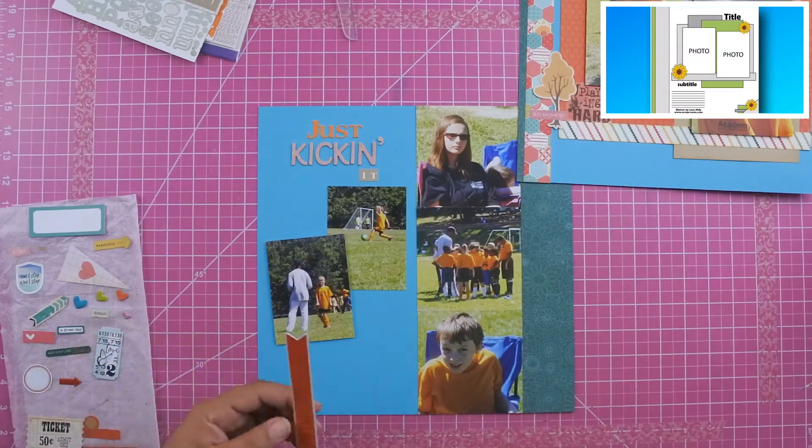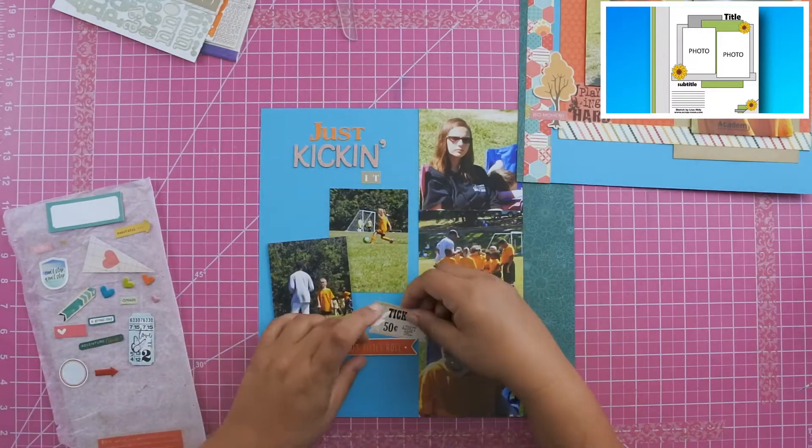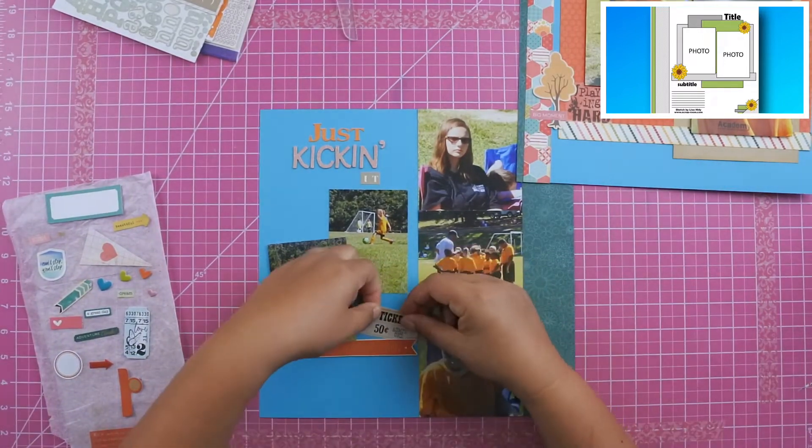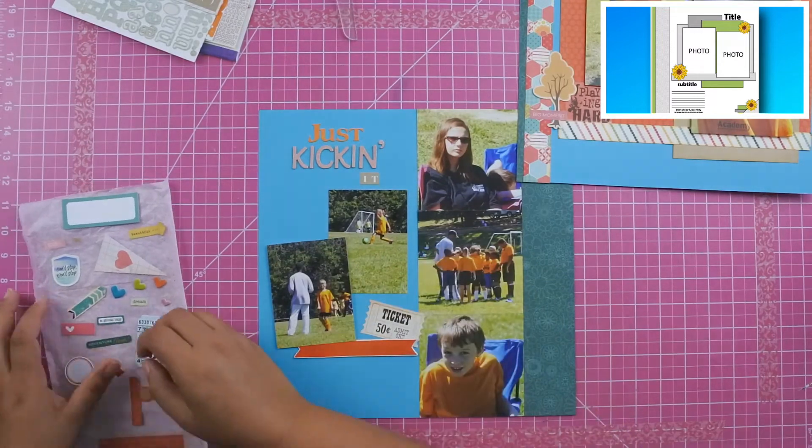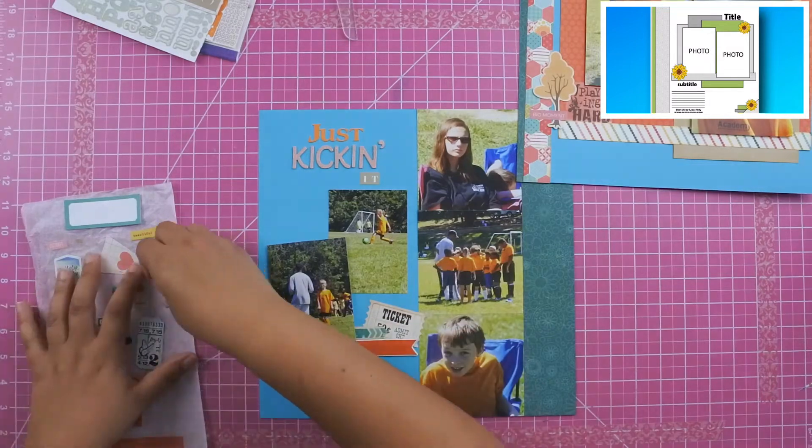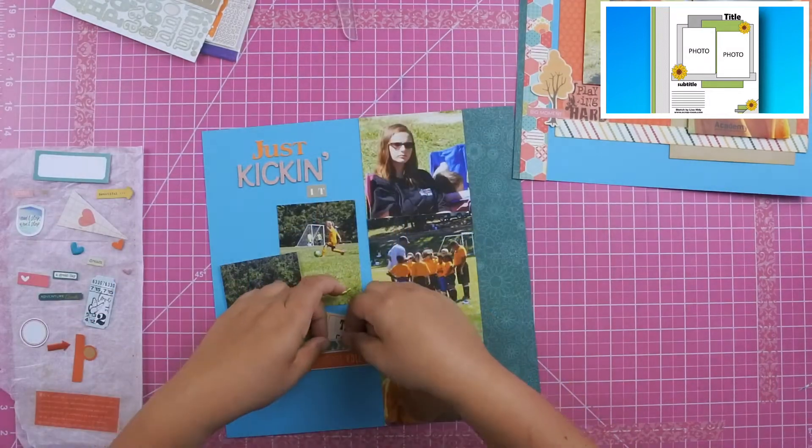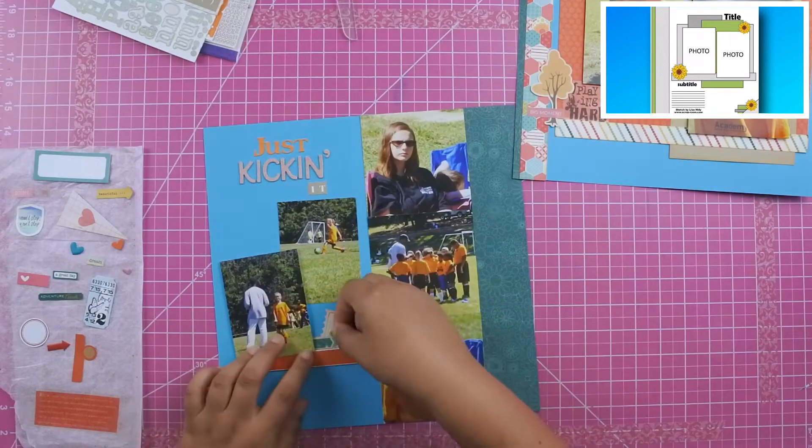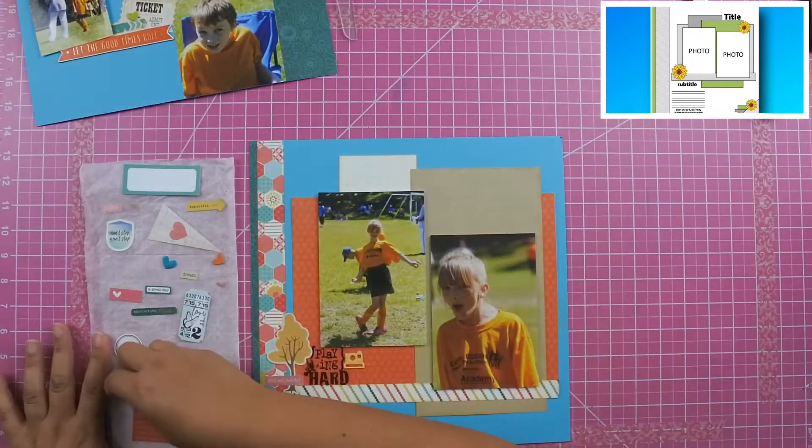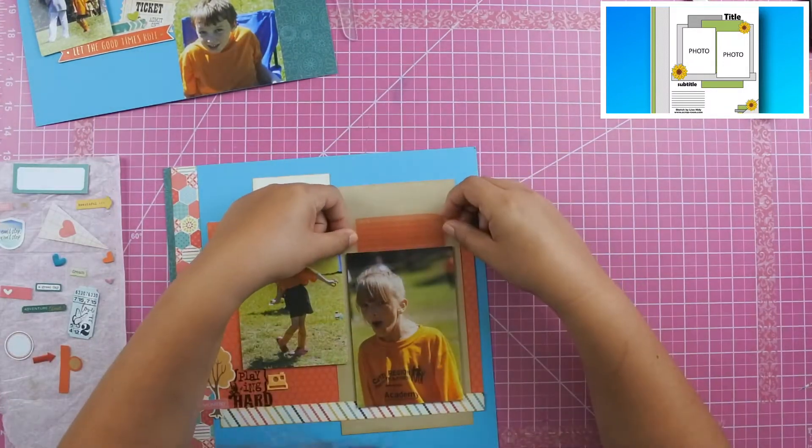Then that little pink word phrase says Big Moment, because this was her first year playing soccer, so it was a big moment for the family. That orange banner that I just put down says Let the Good Times Roll. I thought that was appropriate for a soccer layout. Then I have that ticket and the ticket says I think it's like 50 cents. I'm trying to cover that up because this wasn't really an admission type thing. So I go ahead and that's where I finally put that little banner that I was trying to put on the right hand side of the layout with a little green heart.